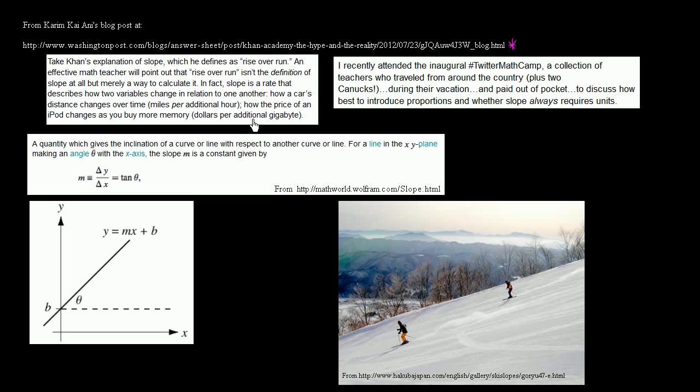These are excerpts right over here. It says, take Khan's explanation of slope, which he defines as rise over run. An effective math teacher will point out that rise over run isn't the definition of slope at all, but merely a way to calculate it. That statement is actually wrong. The definition of slope, and I got this from Wolfram, and if you go to pretty much any credible mathematical site, it will define slope as rise over run. This is the definition of slope.